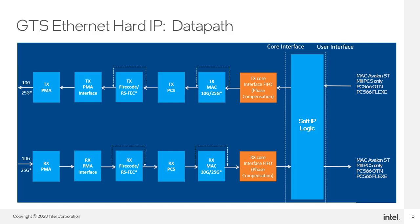This diagram shows the GTS data paths when the Ethernet Hard IP is enabled. In both the receive path along the bottom and the transmit path along the top, you have the PMA and its interface, the optional FEC, the PCS, and the MAC. The interface FIFO in orange ensures successful transfers with the FPGA fabric containing any soft logic to which the data path is connected. At the end of the paths, you have the 10G or 25G Ethernet link on the left and the four supported interfaces into the FPGA fabric on the right.